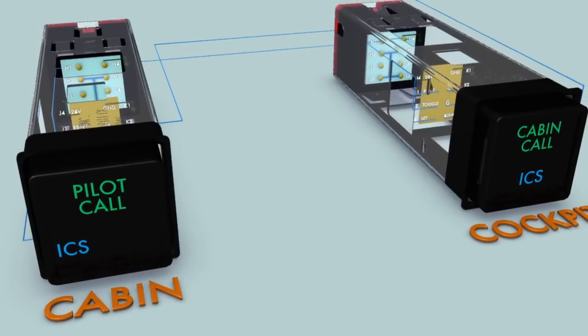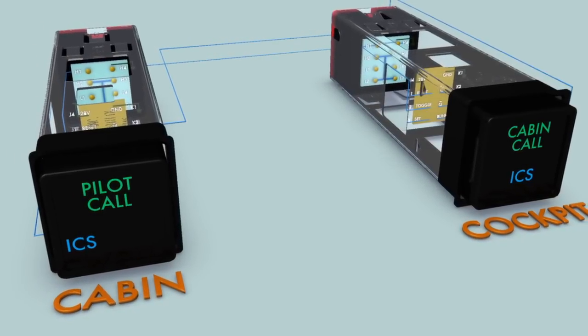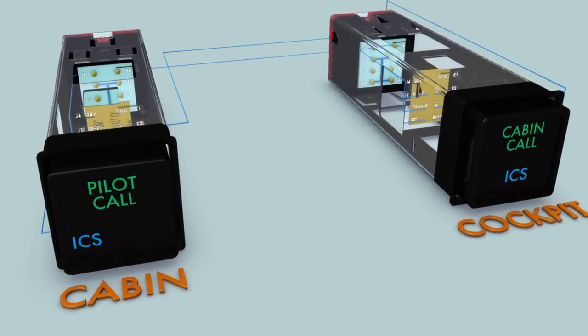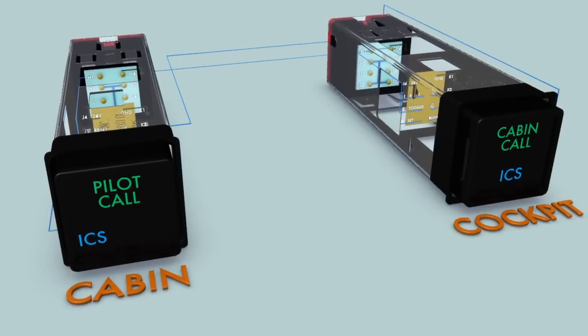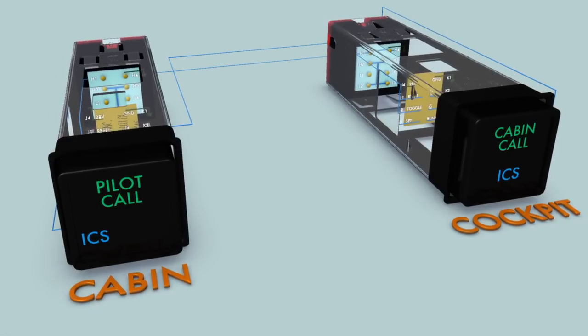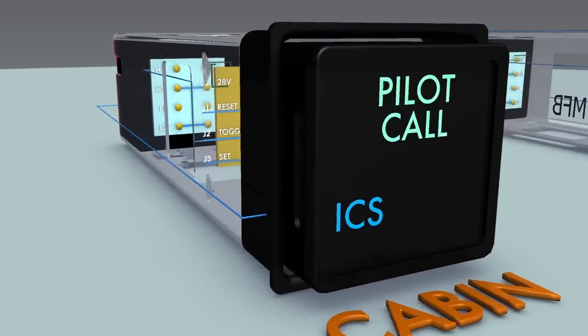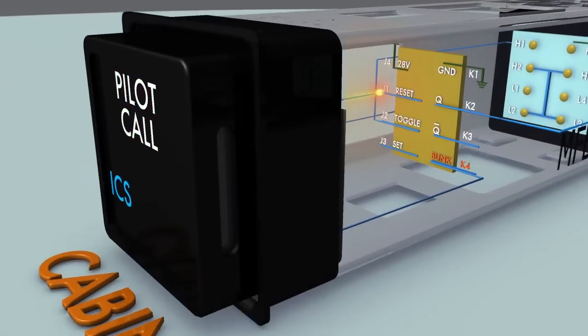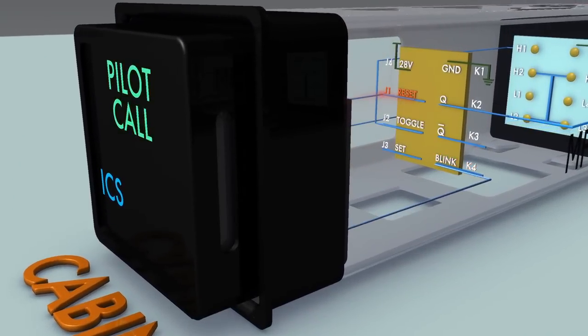The illuminated ICS legends indicate the call between the cabin and the cockpit is active. This function again used the cue output of the cabin call switch initiated by the toggle input. However, the cue output is connected to the reset input of the pilot call switch,